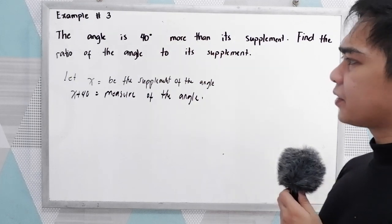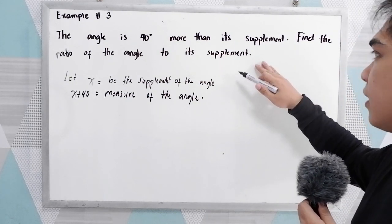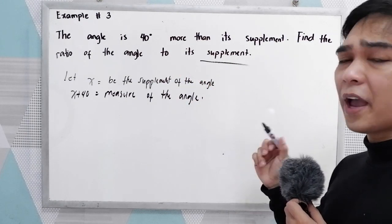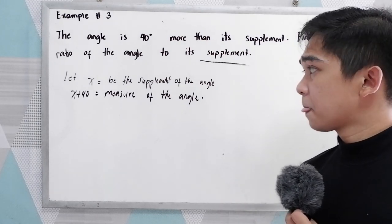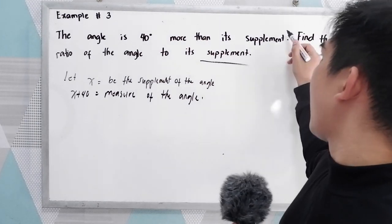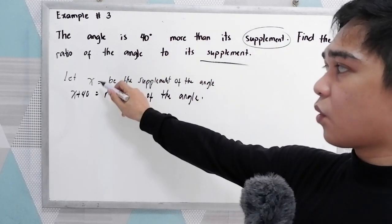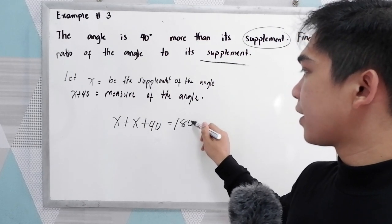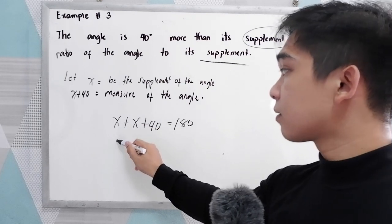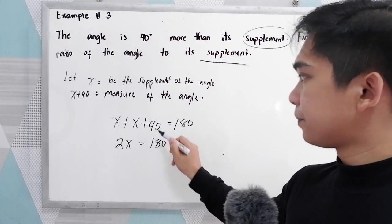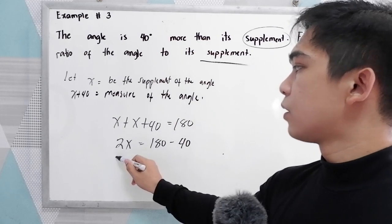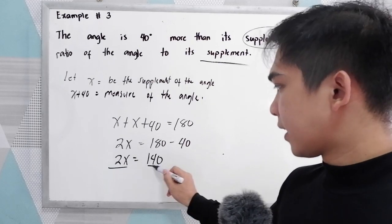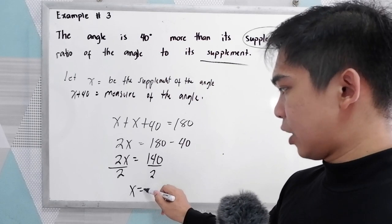After the representation, go back to the given. We have the clue word 'supplement,' so if we add the two: x plus x plus 40 equals 180. So 2x equals 180 minus 40, giving 2x equals 140. Dividing by 2, x equals 70.